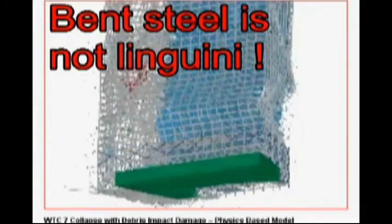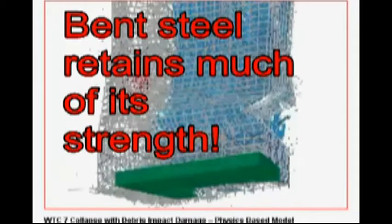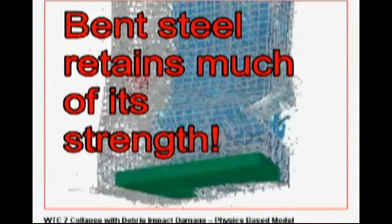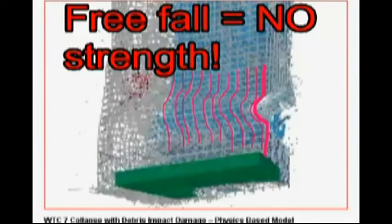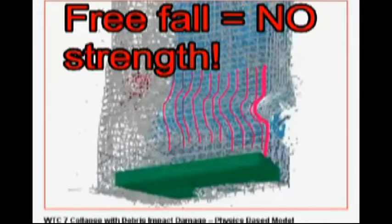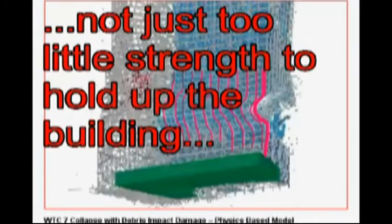Steel buildings are not held up by steel cables that snap when they are overloaded. A better analogy would be springs, like the springs in your car. Springs compress and give way when overloaded, but they do not lose all their strength merely because we put too much weight on them. The springs in my pickup truck cannot support an elephant, but they would not disappear if an elephant climbed in the back.